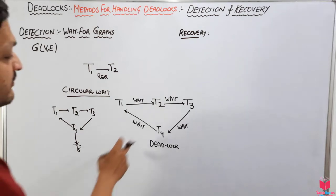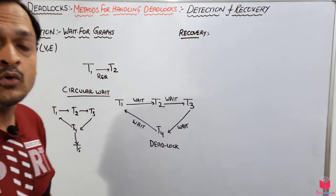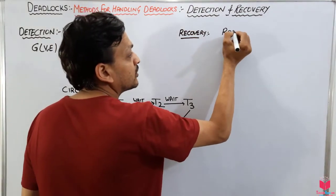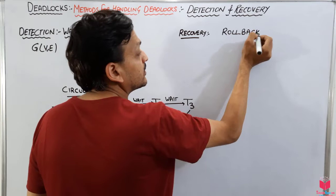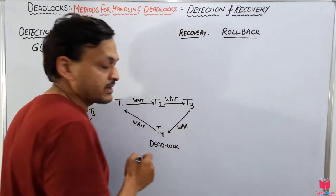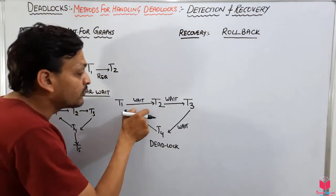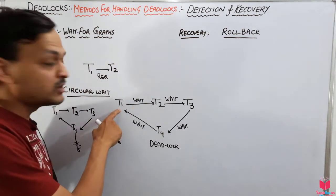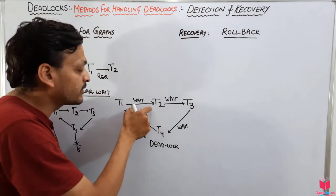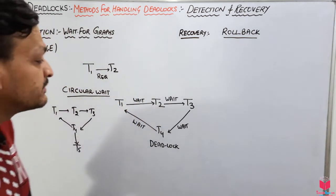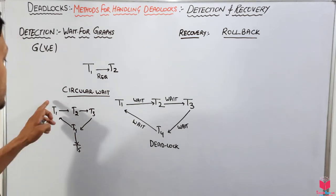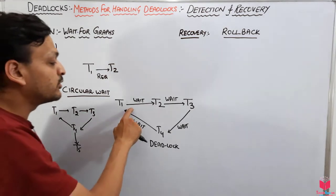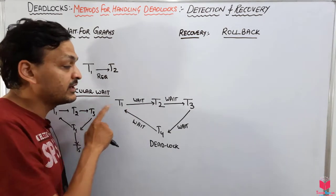Once we have detected a deadlock, how do we recover from it? There is a simple method called rollback. We apply rollback to a transaction — for example, if we rollback T1, the edge from T1 will be removed. With that edge removed, there is no cycle, meaning no circular wait, and therefore no deadlock.